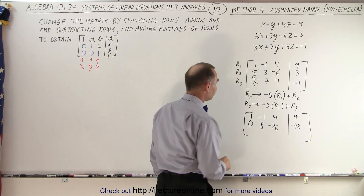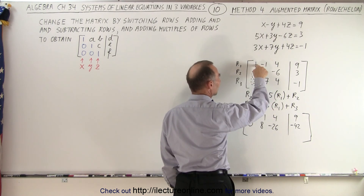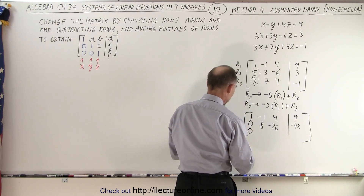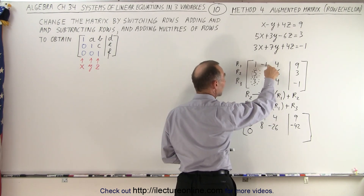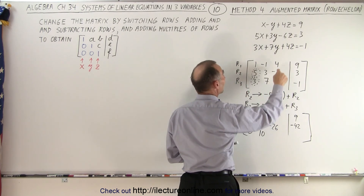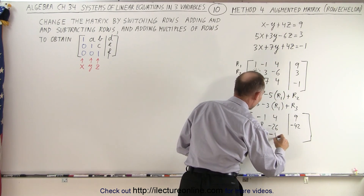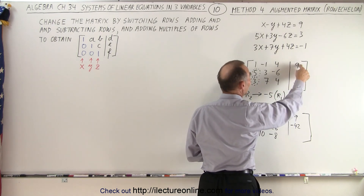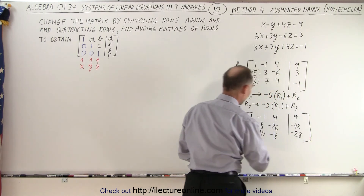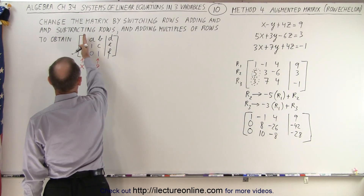Now for Row 3: negative 3 times 1 is -3, plus 3 is 0; negative 3 times -1 is +3, plus 7 is 10; negative 3 times 4 is -12, plus 4 is -8; negative 3 times 9 is -27, minus 1 is -28. So Row 3 becomes 0, 10, -8, -28. The first column is now 1, 0, 0 — exactly what we want.